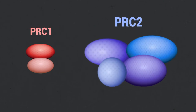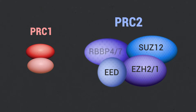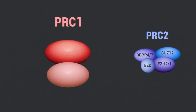The PRC2 core consists of EZH2 or EZH1, EED, SUZ12, and RBBP4 or RBBP7, while the PRC1 core consists of Ring1a or Ring1b, together with one of the six PCGF1 to PCGF6 paralogs.